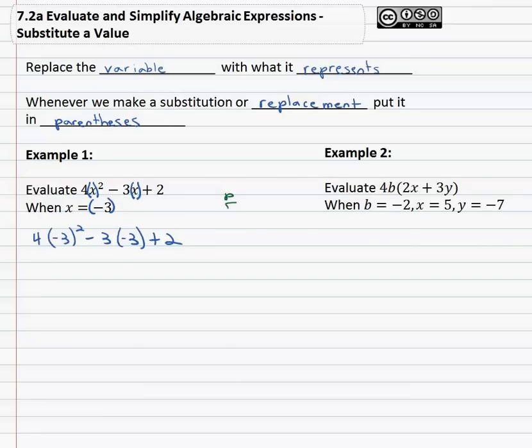We know order of operations says: parentheses, exponents, multiply and divide, add and subtract, PEMDAS. There's nothing really to do with parentheses because inside the parentheses is already simplified as a negative 3. So we'll move on to exponents and we see the negative 3 is squared. So we now have 4 times negative 3 squared is 9, minus 3 times negative 3, plus 2.